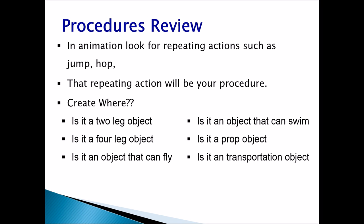Sometimes when you look at your animation, you'll see a lot of repeating actions, such as jump or hop. You're going to take those repeating actions and create procedures for them. When thinking about where to create procedures, consider: is it a two-legged object, a four-legged object, an object that can fly, an object that can swim, a prop object like a wall, rock, or tree, or a transportation object?